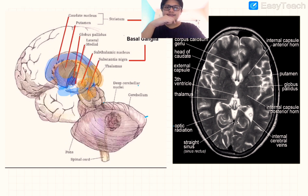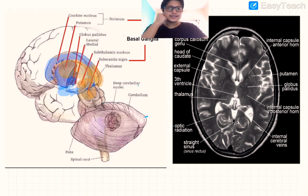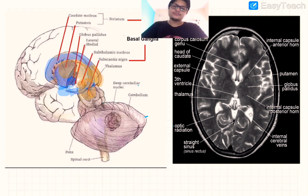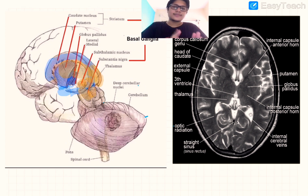That's your basic orientation of the basal ganglia. This is a T2-weighted MRI image. In MRIs there are T1 and T2 weighted images — in T1 weighted images gray matter appears gray and white matter appears white.